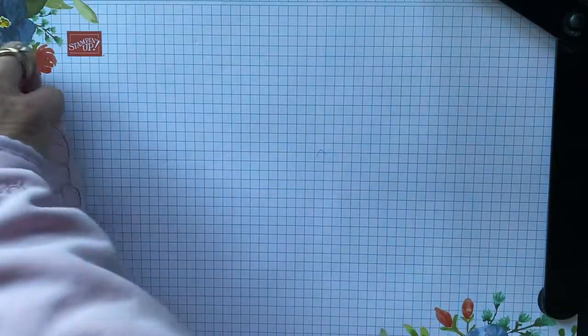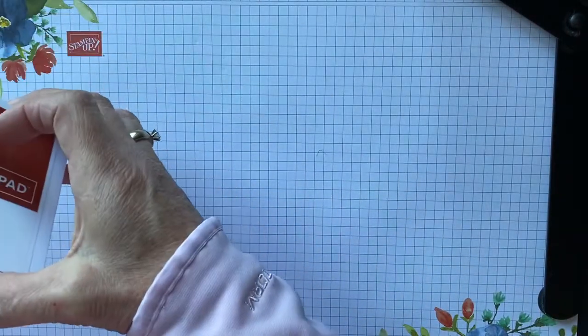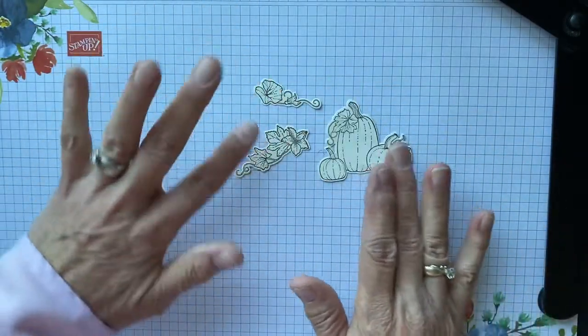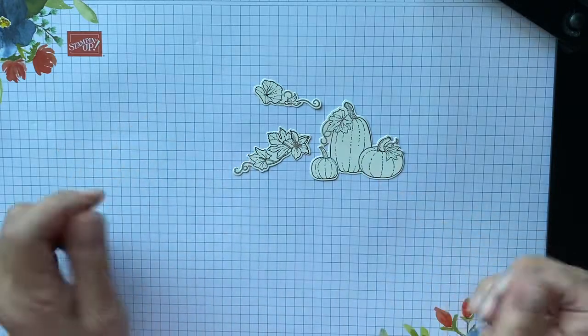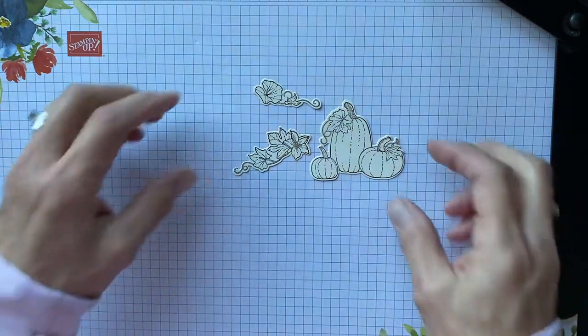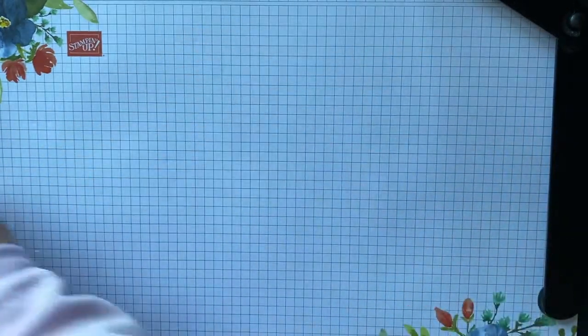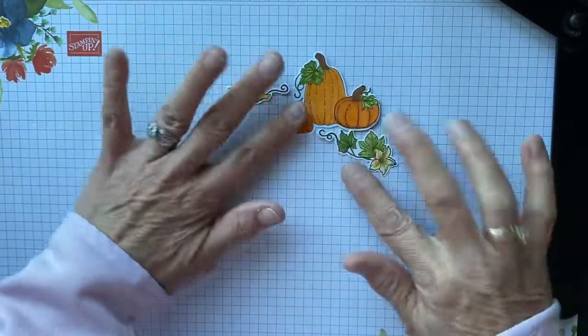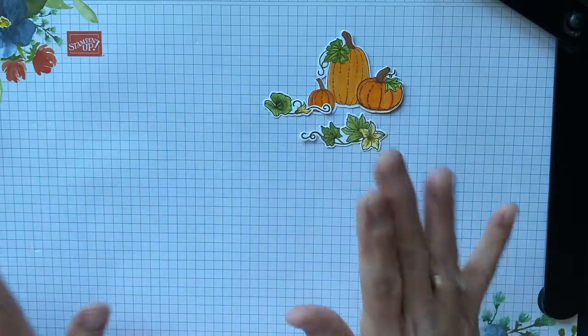So once you've cut them—and I have already pre-cut them, I was playing with the Very Vanilla—so this is what they look like when they're pre-cut. I ended up using the Basic White, so I did like that look better. So this is how they look when you have die cut them and colored them. I didn't want to bore you with having to watch me color.